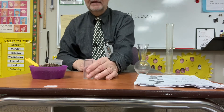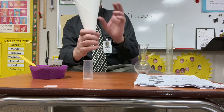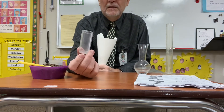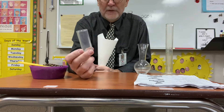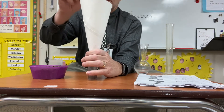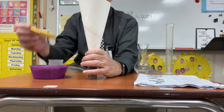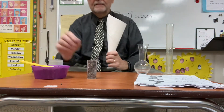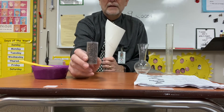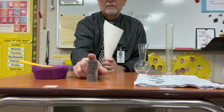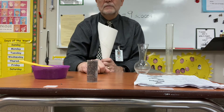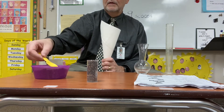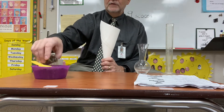Now let's get this one. What's your prediction? Draw a picture of this container. How many scoops is this going to take? One, two, three. So on your paper, write that this container equals three scoops. You can pause this so you can get that written.